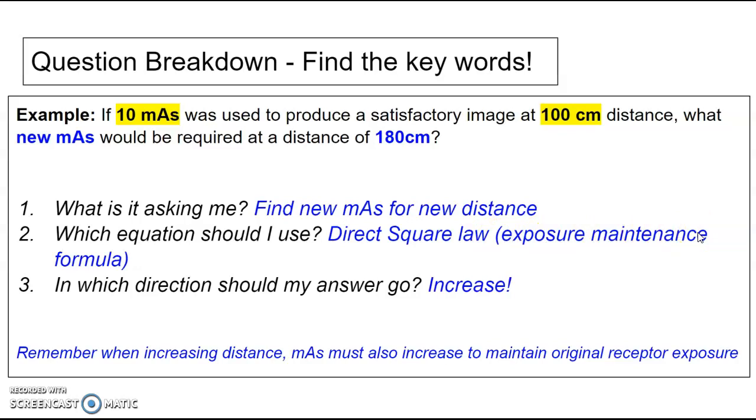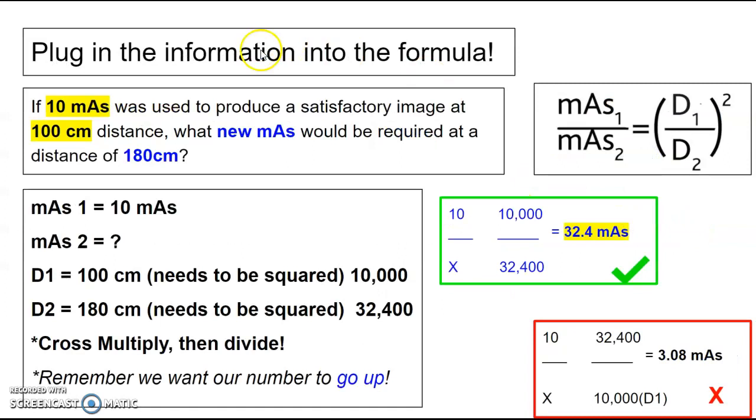Which direction should my answer go? So if I'm moving farther away, should my mAs go up or should it go down? I'm hoping you say my mAs is going to go up. That would make sense. So if you plug it into the formula, and again, here's the formula. It's similar to the inverse square law, but remember, they're directly across from each other.